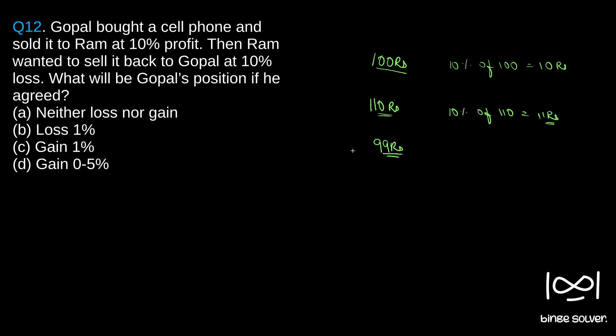As you can see, its original cost is 100 rupees and there is 1 rupee difference. Gopal got it for 1 rupee less. So that means 1% gain. This is how we get 1% gain.